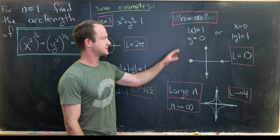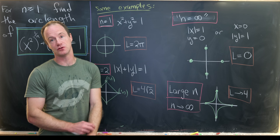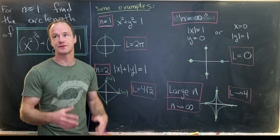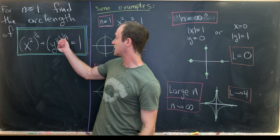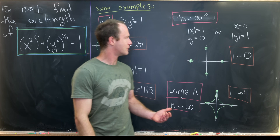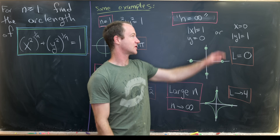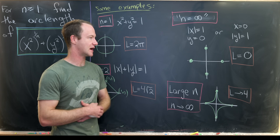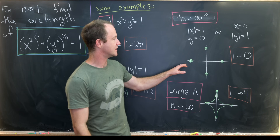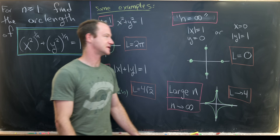Now let's look at the difference between the case when n equals infinity versus large n as n approaches infinity. If n equals infinity, you can think of the exponent as being 0, which boils down to: when is |x|=1 while y=0, versus when is x=0 while |y|=1. So when n equals infinity, we just get those four points, which represent a zero-dimensional space — so the arc length L would equal zero.